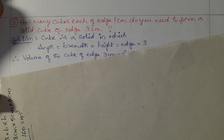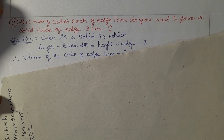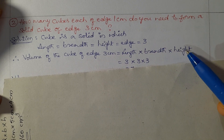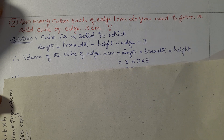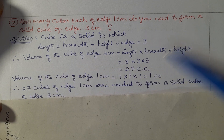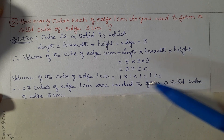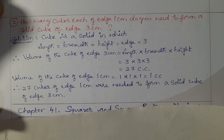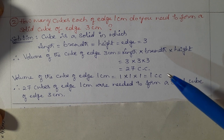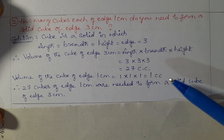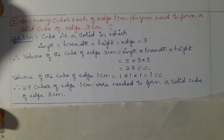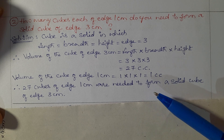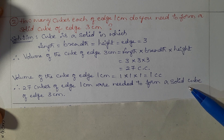Volume of the cube with edge 3 cm = Length × Breadth × Height = 3 × 3 × 3 = 27 cubic centimetres. Volume of a cube with edge 1 cm = 1 × 1 × 1 = 1 cubic centimetre. Therefore, 27 cubes of edge 1 centimetre are needed to form a solid cube of edge 3 centimetres.